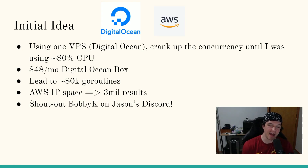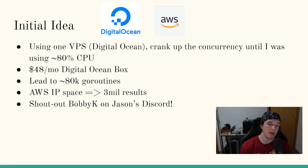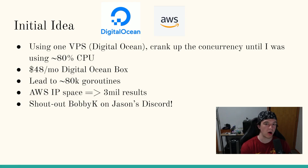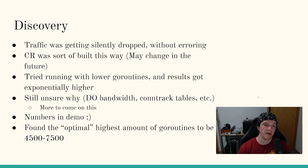Shout out to Bobby K - on Jason Haddix's Discord, someone mentioned they were using lower concurrency and getting much different results. I had never actually experimented with it; I just assumed it would error or panic if there was a problem. But really, the way I wrote the tool, it just rolls right over the errors - it doesn't panic, it doesn't stop, it doesn't error. If it times out, it keeps going. The only point of the tool is just to get as many certificates as you can as fast as you want.